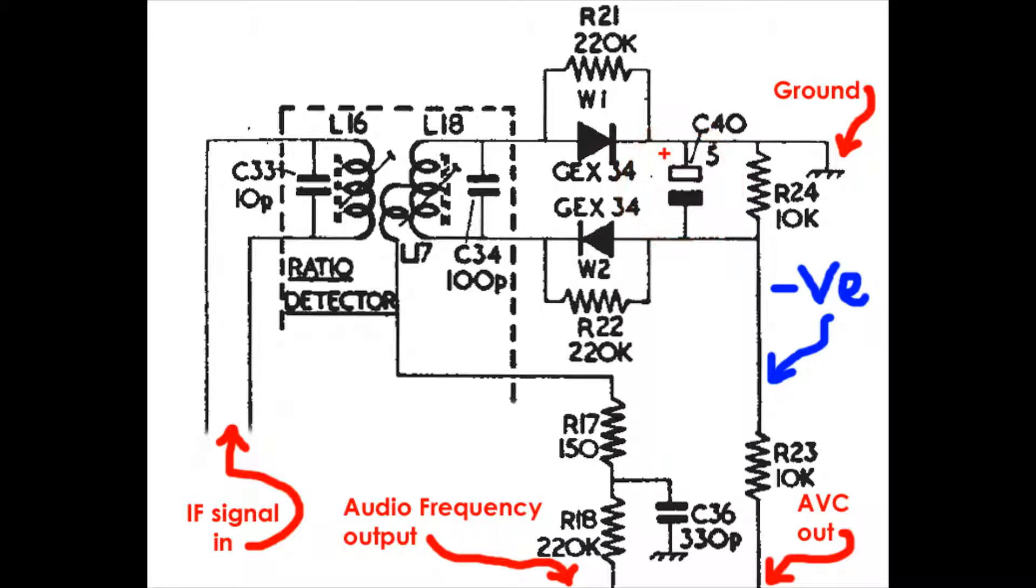The resistor R24 determines the response rate, so as it's charged or discharged. So if the signal level increases or decreases, R24 will help to shape that response rate.